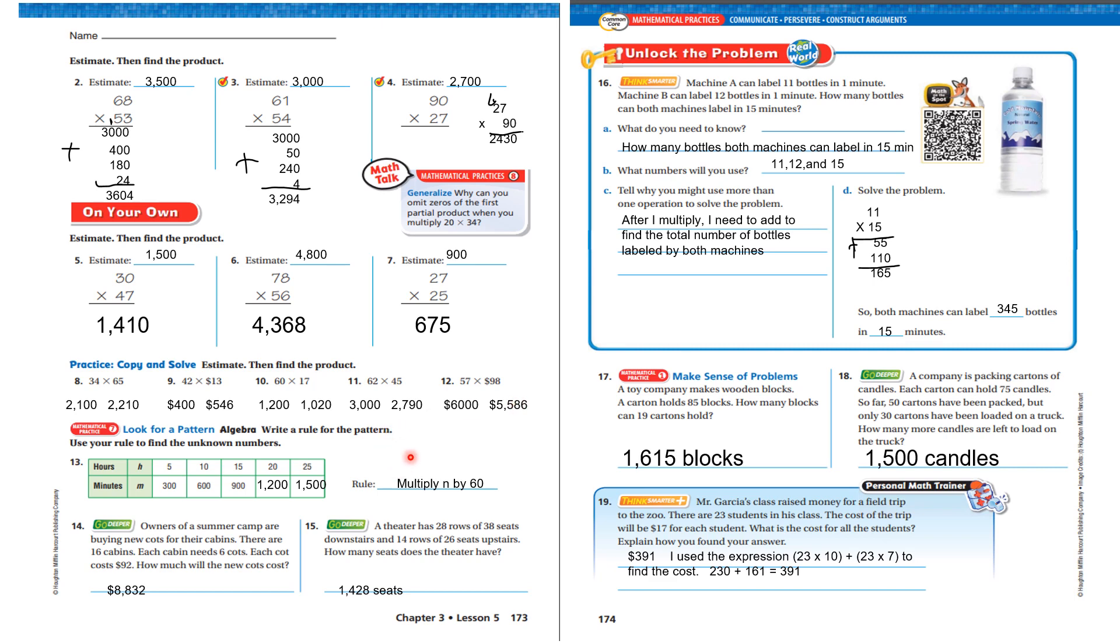It says look for a pattern. So we have H, 5, 10, 15, 20, 25. Minutes. M, 300, 600, 900. It would be 1,200 and 1,500. And the rule is multiply N by 60.